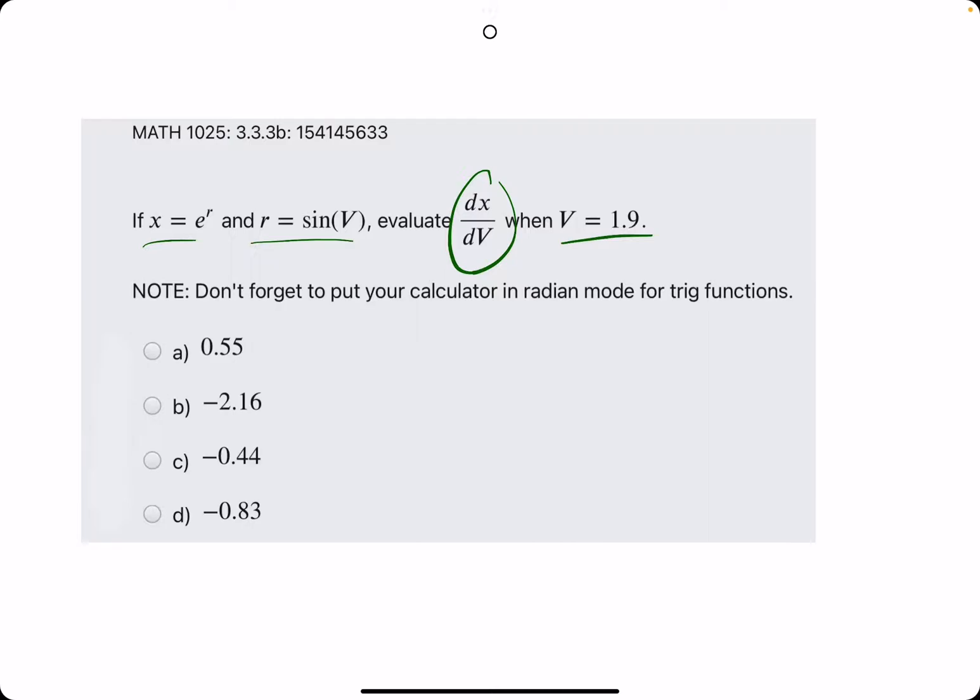So, to simplify this process here, what we need to do is construct a function with an inside and an outside layer, and they're kind of giving us the different layers here, so we need to construct them into a single function x, then take the derivative using chain rule, then plug in whatever value they tell us to.